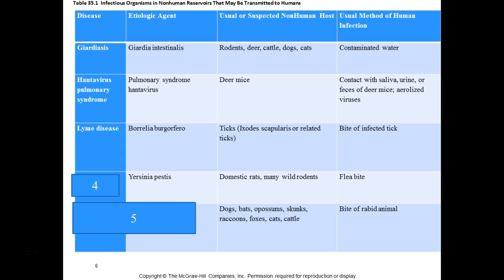Yersinia pestis causes the plague — and it still occurs, with about 100 cases in the United States each year. Most people think of it as a medieval disease, but it persists. The scary form is pneumonic plague, where it infects the lungs and spreads respiratorily. The plague itself typically infects the lymphatic system — the system that drains and recirculates body fluid — causing swollen buboes. It is spread by fleas.